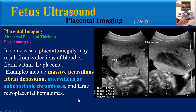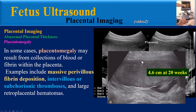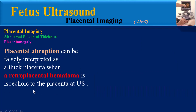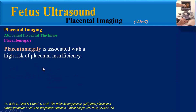Examples of fibrin deposition causing placentomegaly include massive perivillous fibrin deposition, intervillous or subchorionic thrombosis, and large retroplacental hematomas. In this ultrasound image, the placental thickness measured about 4.6 cm at 20 weeks gestation; oligohydramnios was also present and the maternal serum alpha-fetoprotein level exceeded 18 MoM. Pathologic examination following delivery confirmed a large intervillous thrombus. Placental abruption can be falsely interpreted as a thick placenta when a retroplacental hematoma is isoechoic to the placenta at ultrasound.